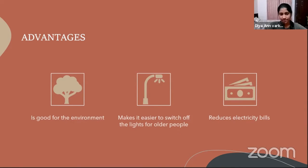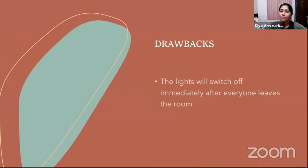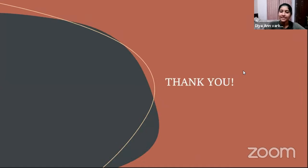Advantages: it is good for the environment, it makes it easier for older people who are often forgetful, and it reduces electricity bills — when someone forgets to switch off the lights leaving them on for hours, a lot of electricity is wasted. The drawback is that the light switch will turn off immediately after everyone leaves the room, so if you are planning on coming back after a few minutes, it may be a small problem. Lastly, I would like to thank everyone for your patient listening and I would like to thank ATL Lab for giving me this opportunity. Thank you.